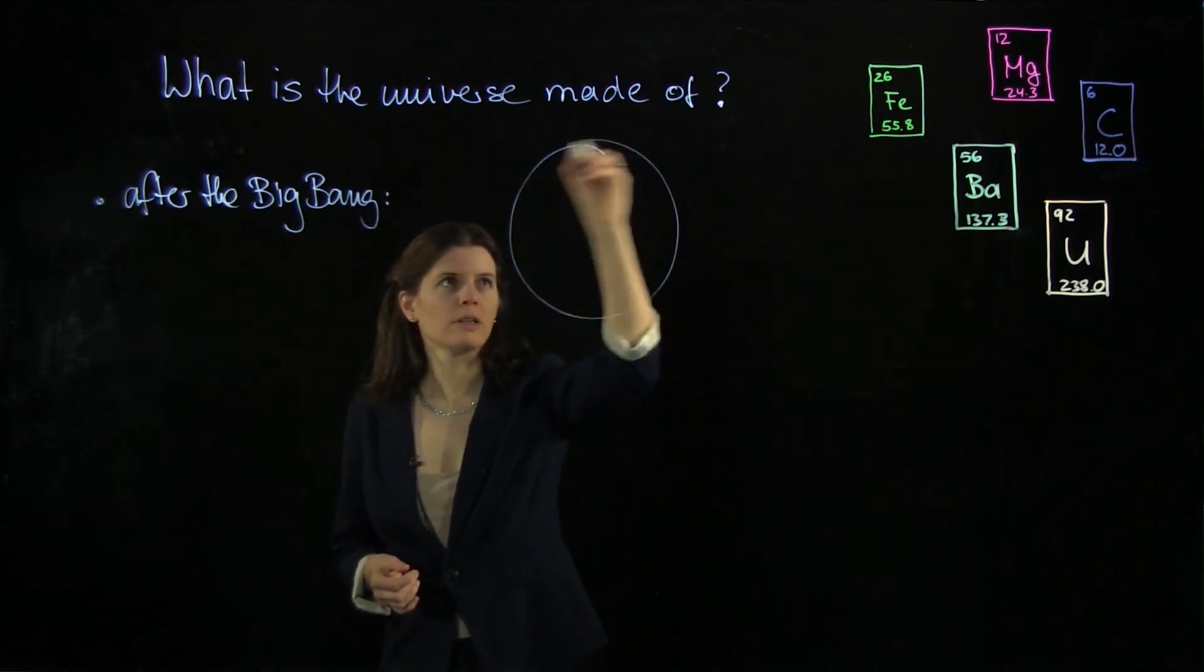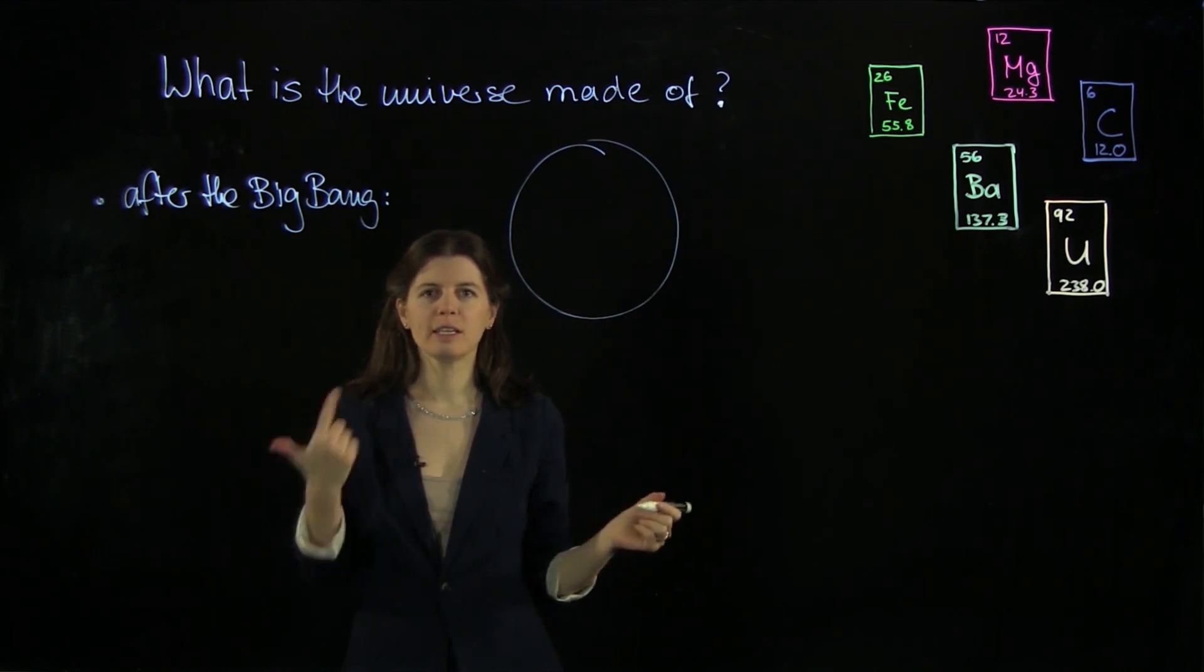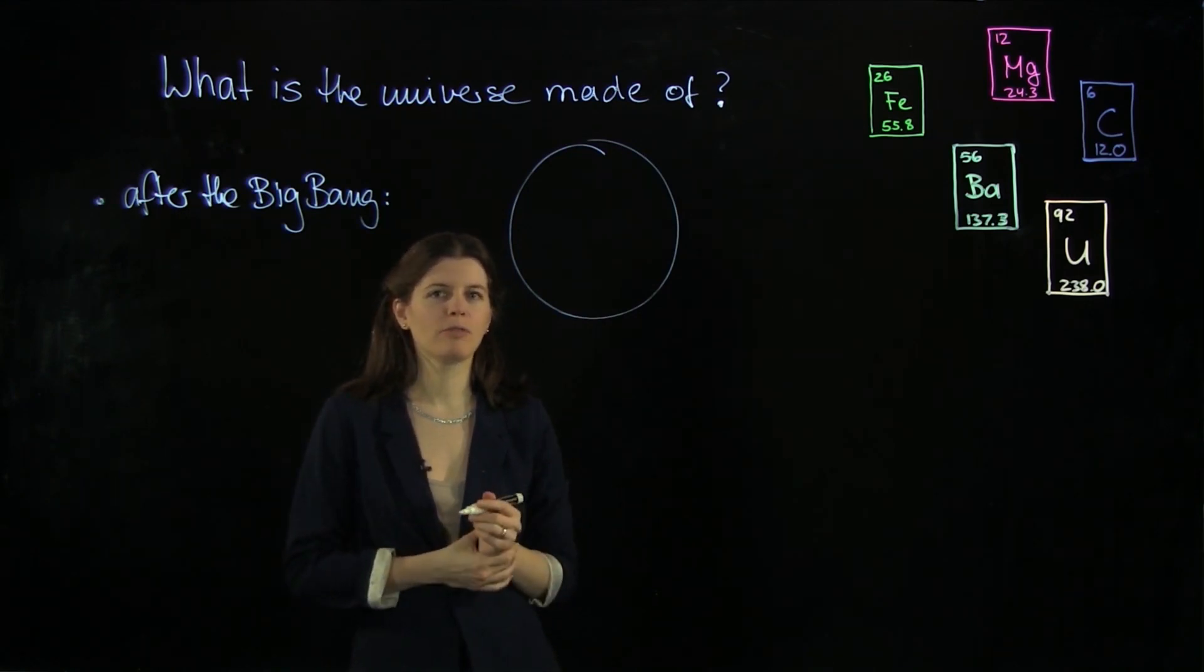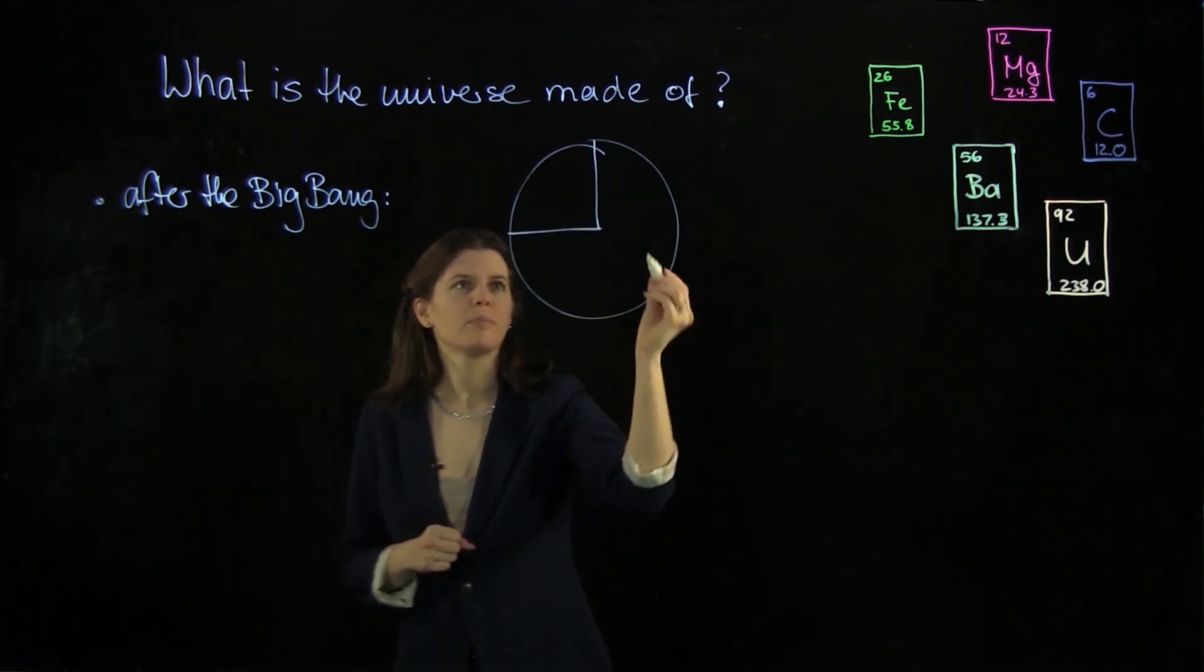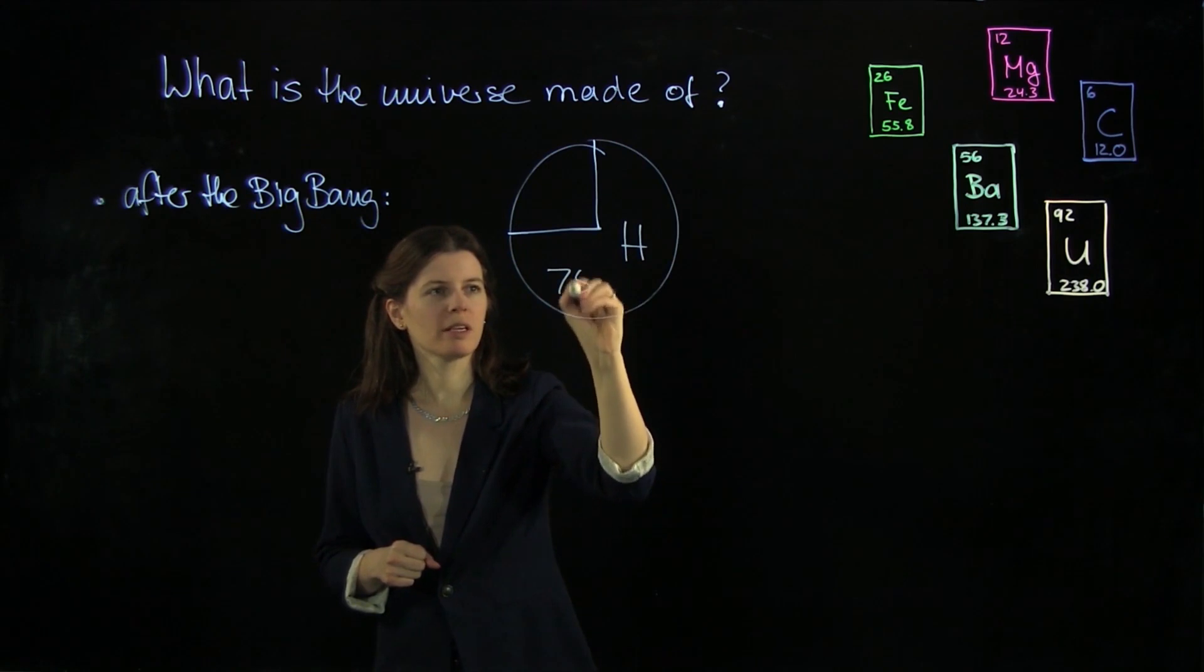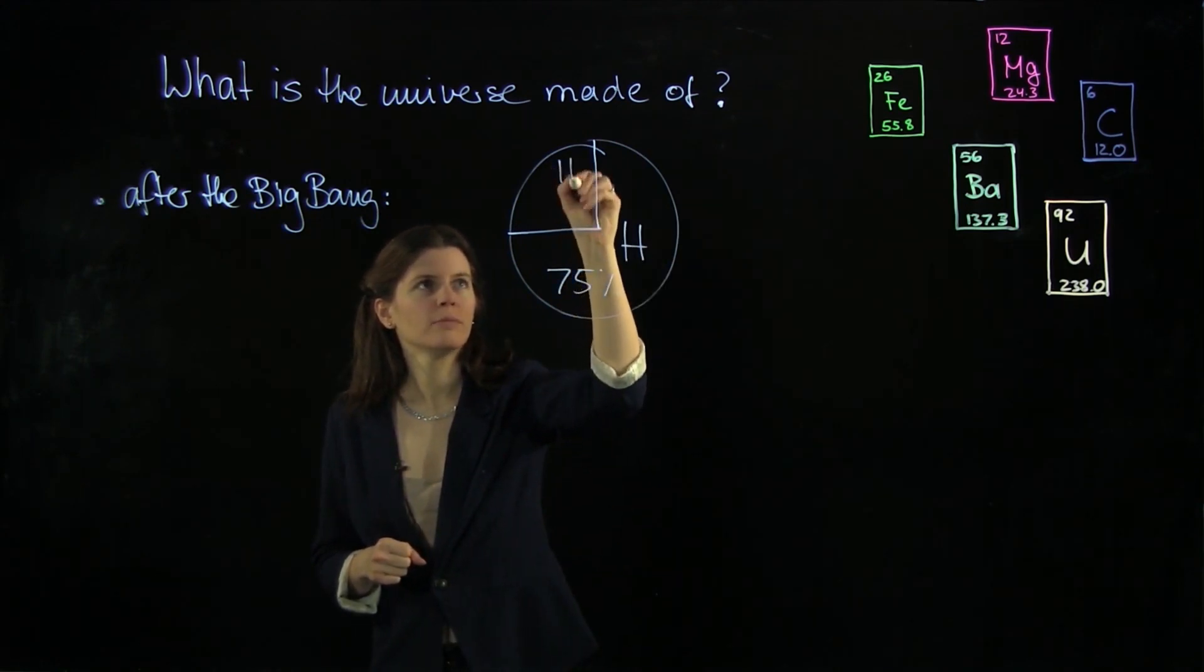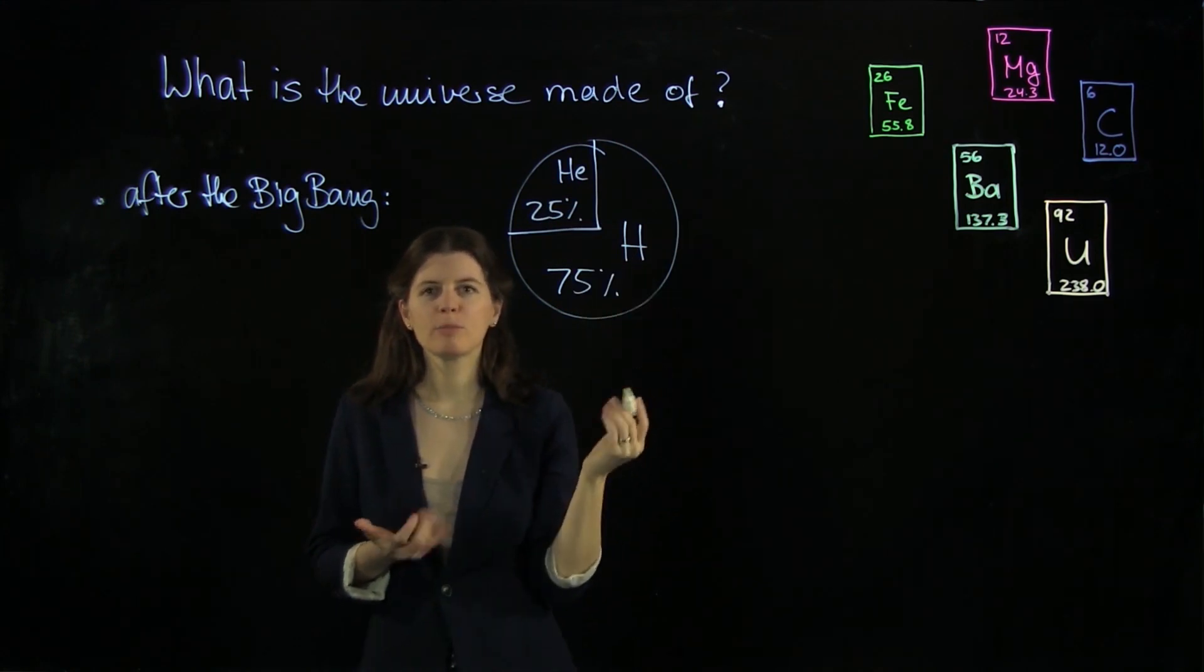So if we draw a little pie chart here, the universe was made from just hydrogen and helium and tiny little bits of lithium. We can just cut it up like this. And so this is hydrogen, 75%, and helium, 25%. And that pretty much adds up to 100 already.